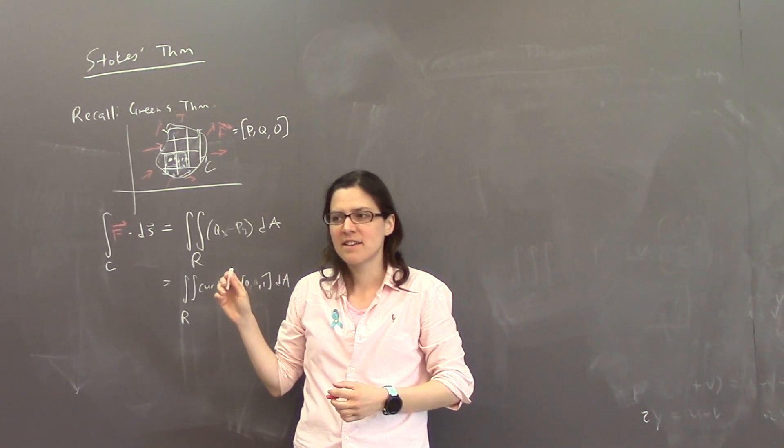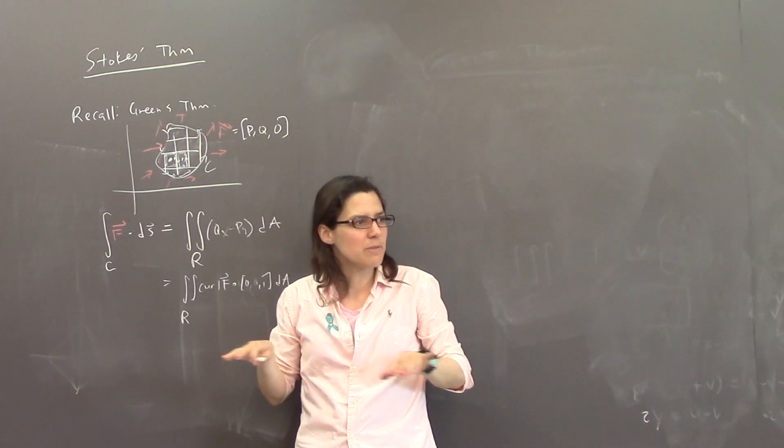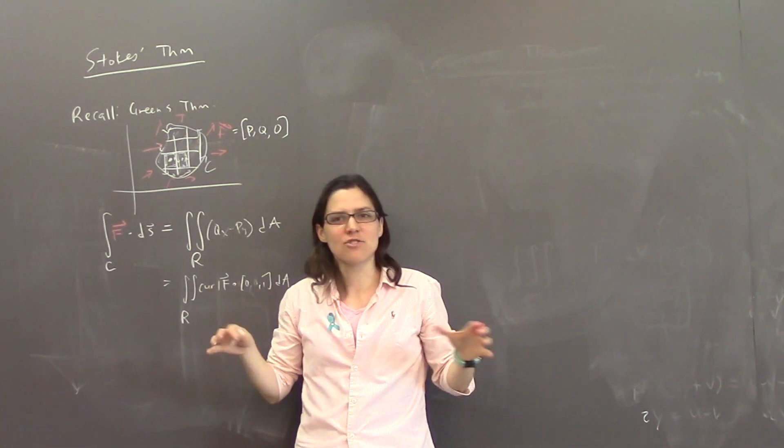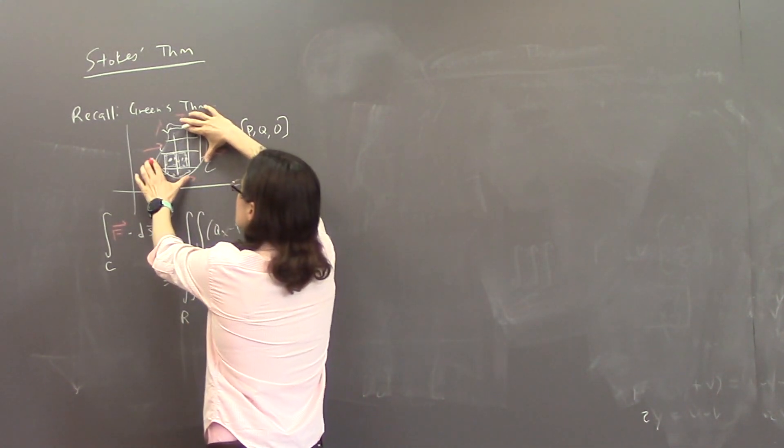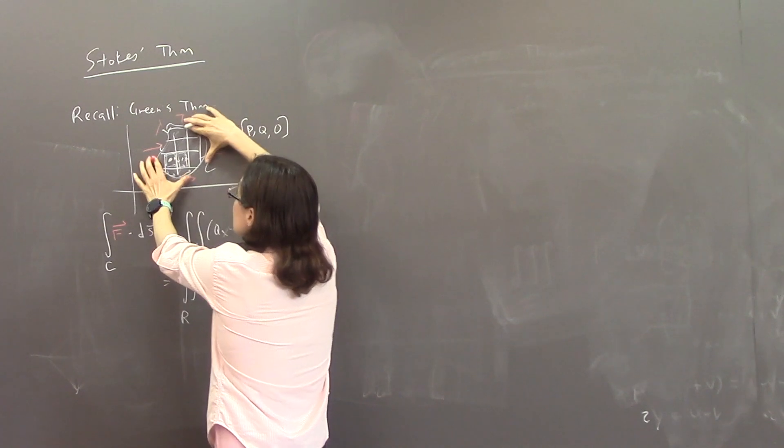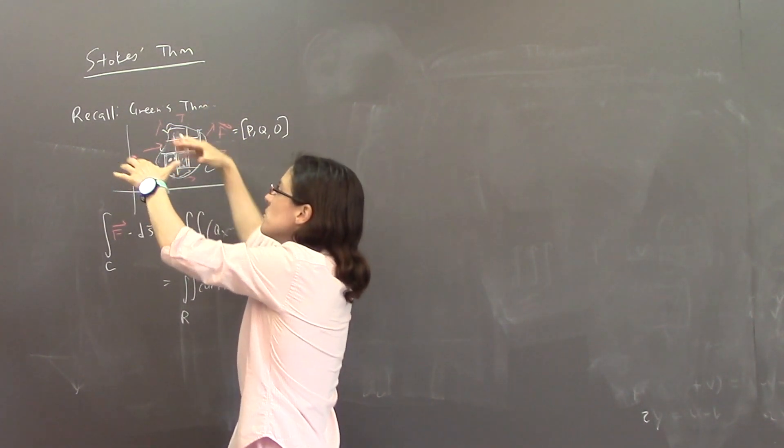You know Flatland? There's like a creature who lives in two dimensions and someone's like, you should come into three dimensions. And he's like, what's three dimensions? And they're like, just up and out, up and out. So you imagine that this thing that has only ever lived in two dimensional space suddenly comes up and out, and then you blow into it.